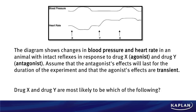Before we even look at those answer choices, take a look at that diagram. You see we've got blood pressure on the top, heart rate on the bottom. We give X at the first point, Y at the second point, and then X at the third point. Remember what the question said — when we give X, the agonist, the effects are transient. So it should make sense that when we first give X, something happens but then it goes away. Then we give Y, which is permanently there, and then X on top of Y after that.